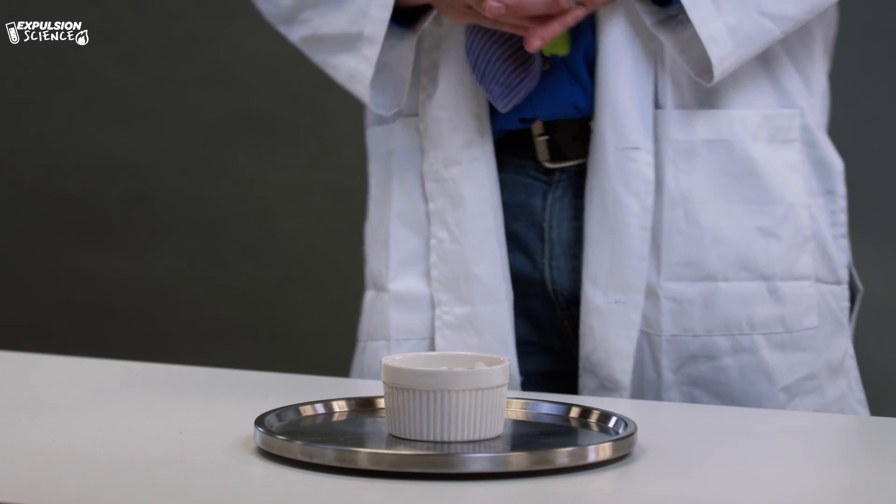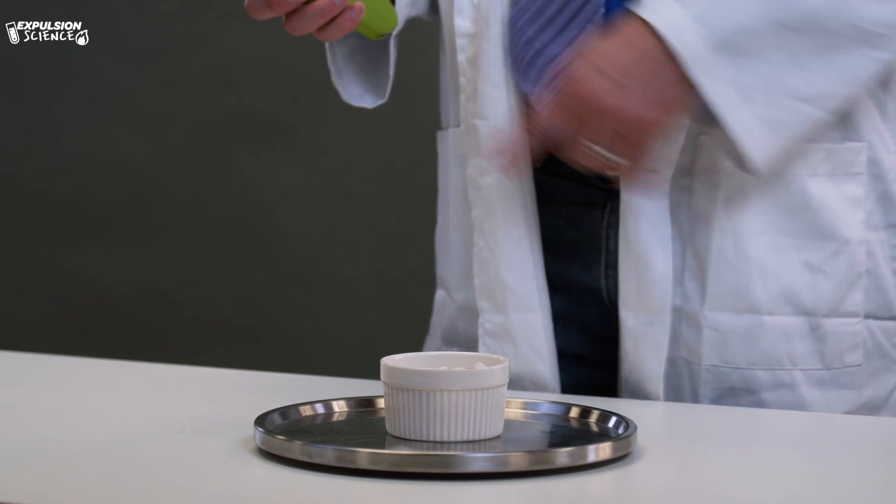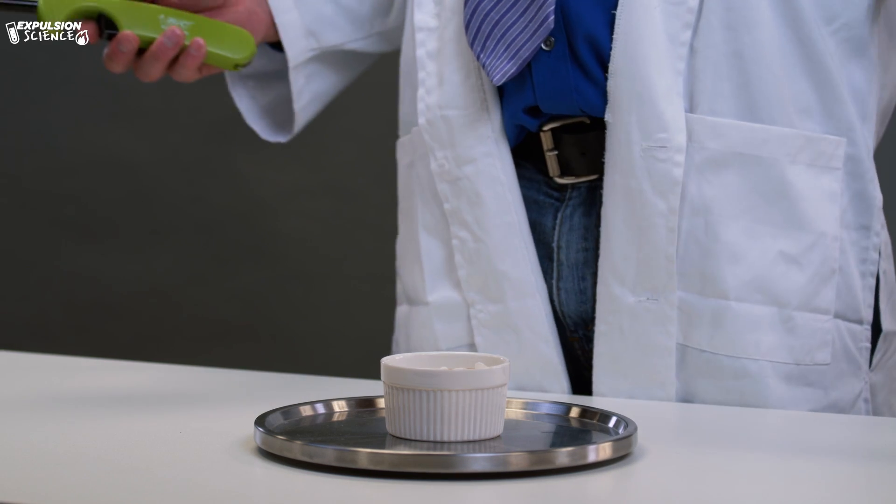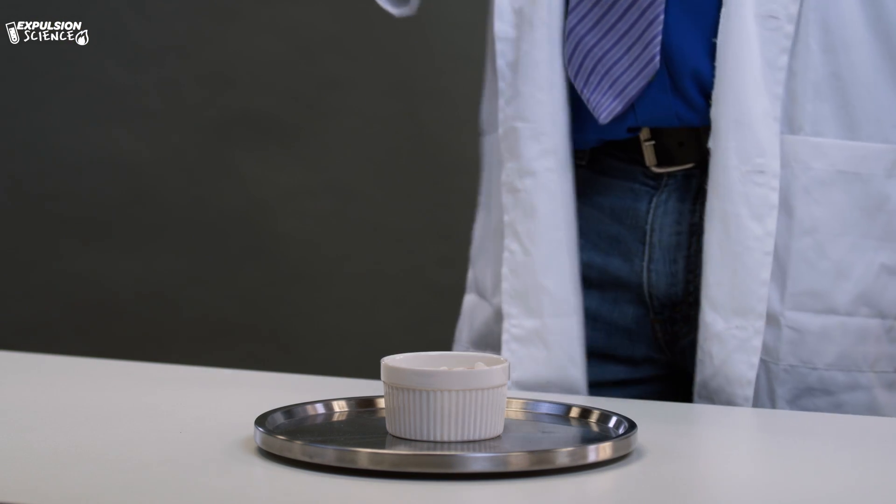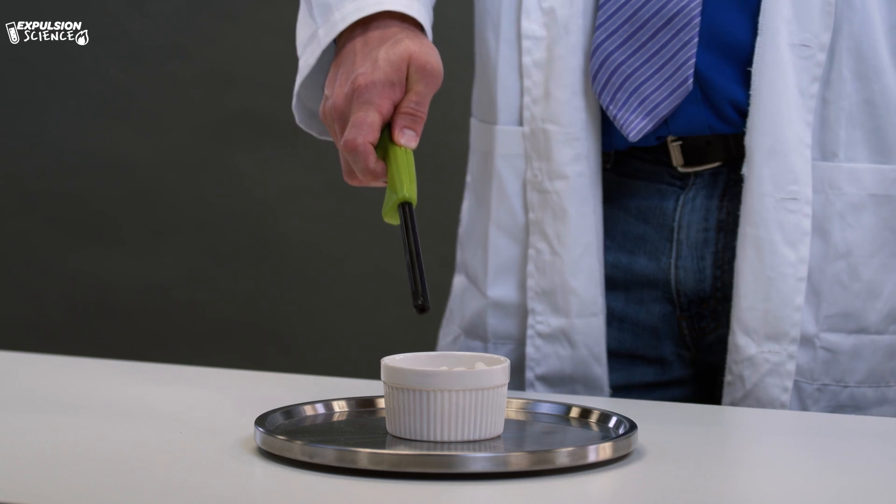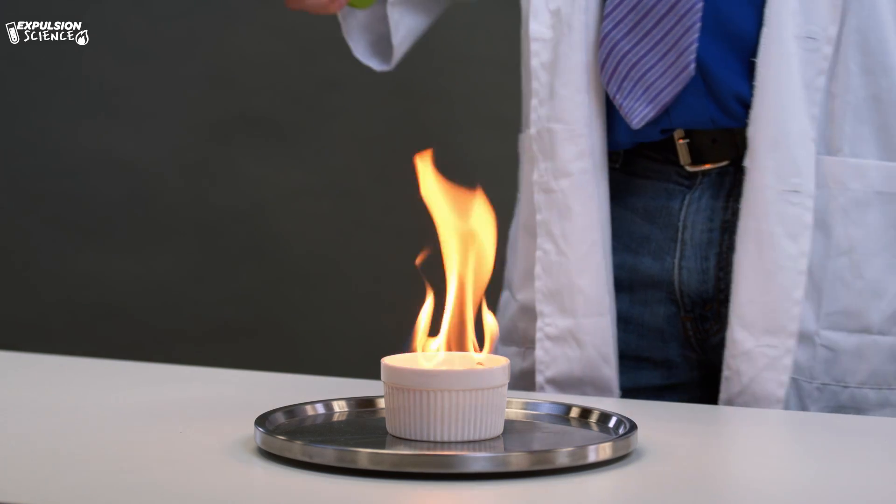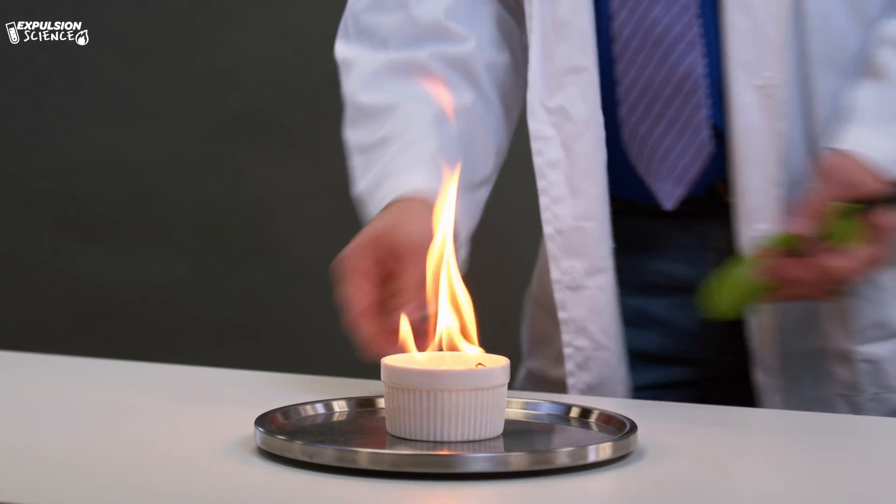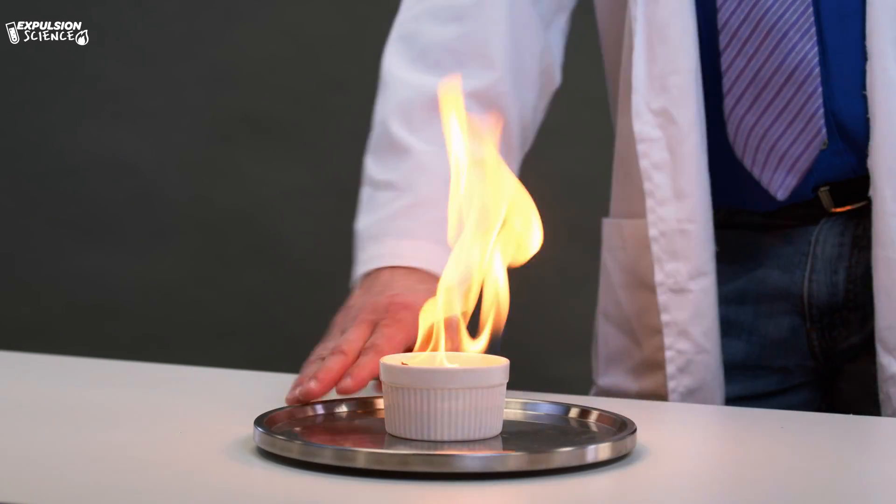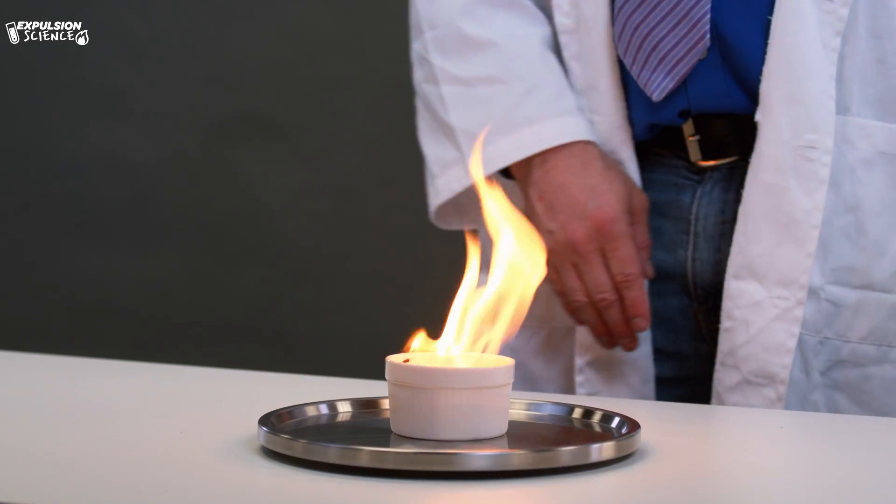Now to begin this experiment, we're going to take our ramekin that's filled with alcohol and has a paper towel in here. We're going to put it on our lazy Susan and we're going to light it on fire, and then we're going to turn it and see if it creates a fire whirl. So let's see. Here we go. This is not the fire whirl that we were expecting, so we're going to add the trash can and see what happens.